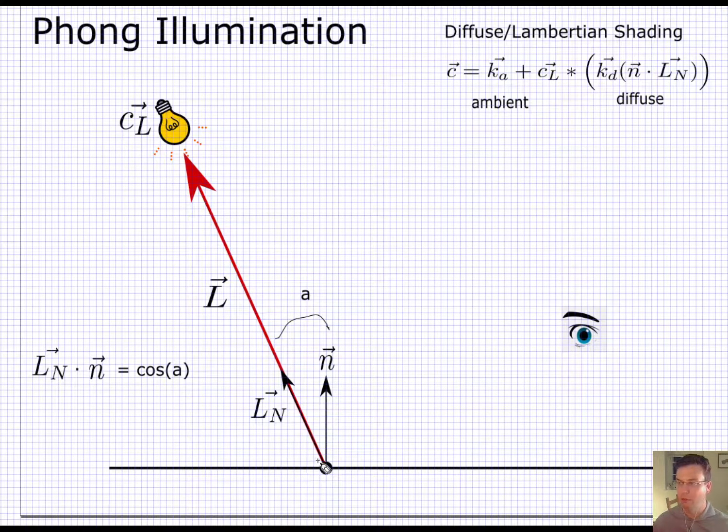So what I'm going to do is I'm going to set up a vector that points in the direction of the eye. I'll call this vector h. Let me get that arrow going there.